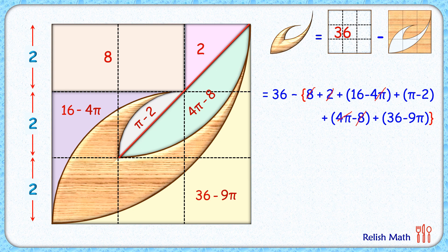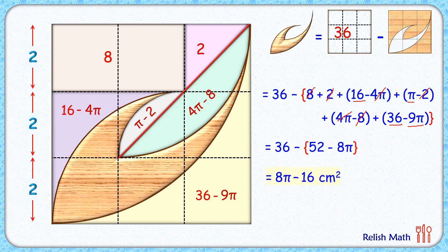Also 8 and minus 8, and 2 and minus 2, all cancel. What we are left with is 16 plus 36, which is 52, and π minus 9π, which is 8π. So the brown shaded region is 36 minus (52 minus 8π), which equals 8π minus 16 centimeter square. That is our answer.